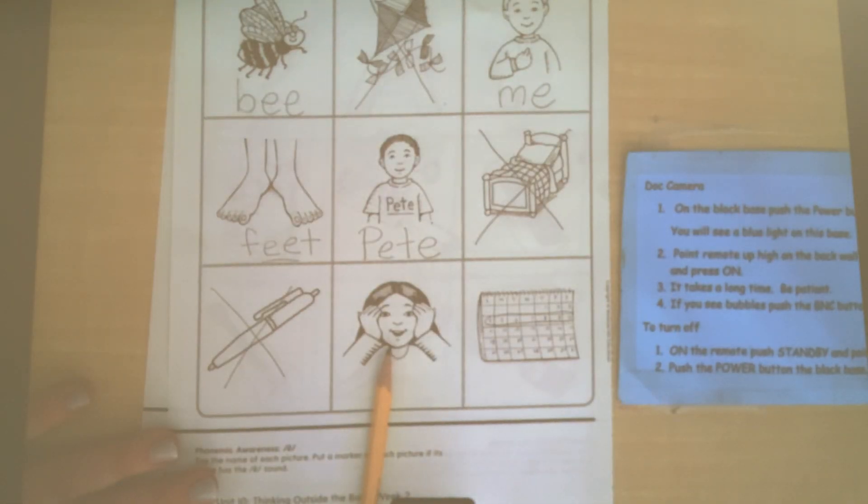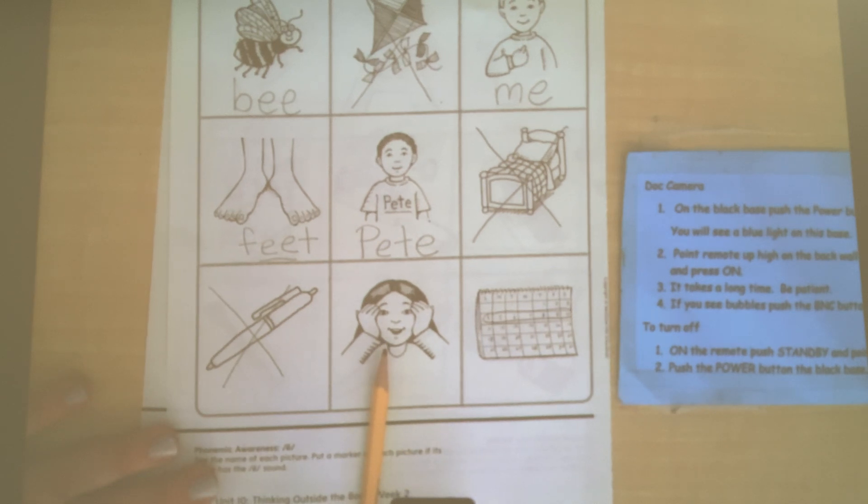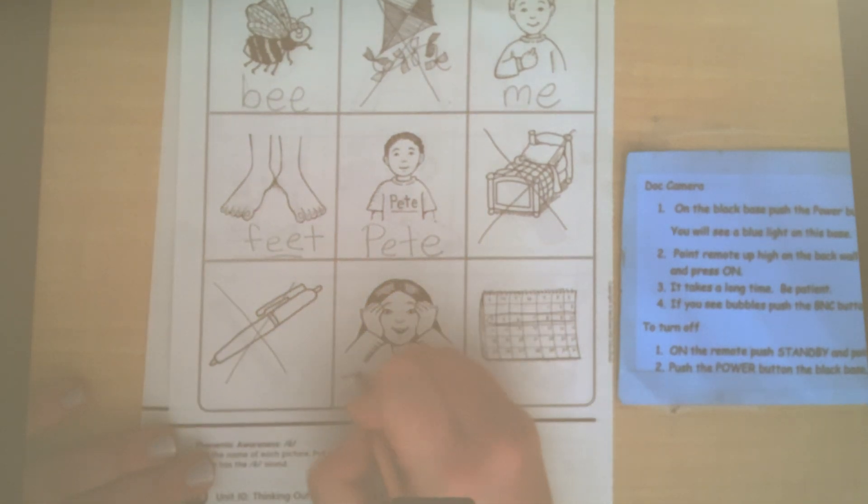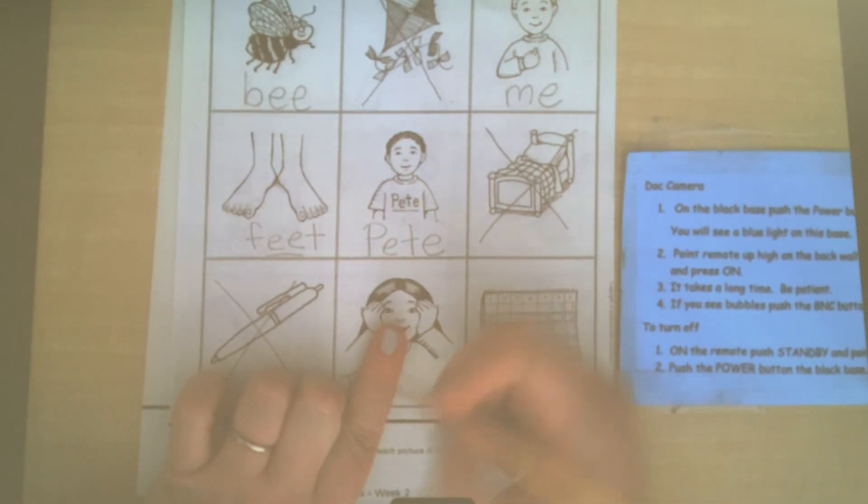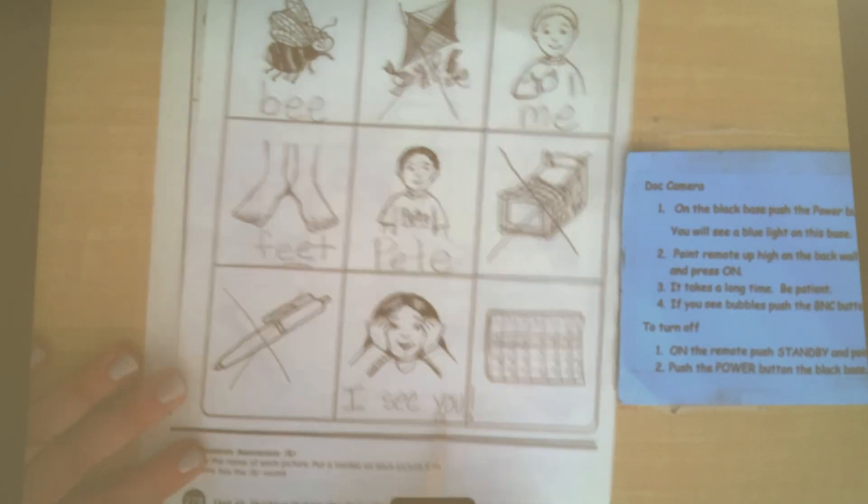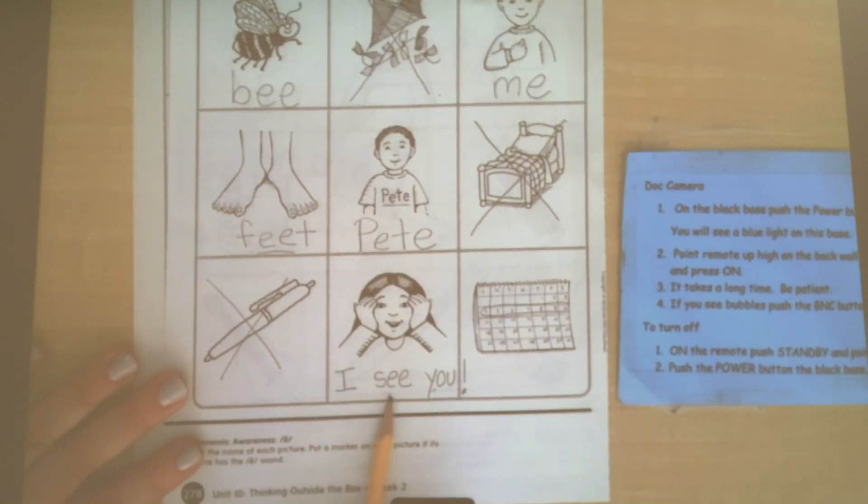This girl is saying, Peek-a-boo, I see you. You know what? Because those are all sight words, let's write that whole sentence. Capital I. Spaceman, see. I can spell C, S-E-E, Y-O-U spells you. I see you. I see you.